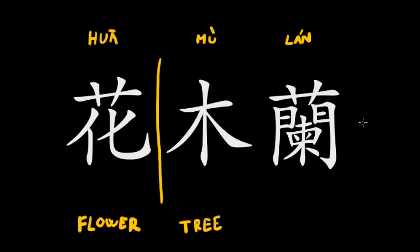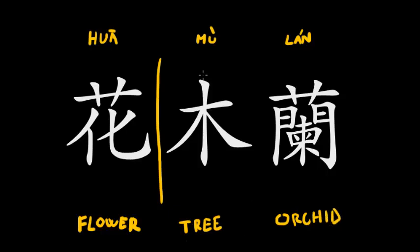The last character in her name — if you translate it — is a type of flower, either an orchid or something similar. So her name in Chinese translates roughly to 'flower, tree, orchid,' and it's a fairly complicated character to write compared to the first two.